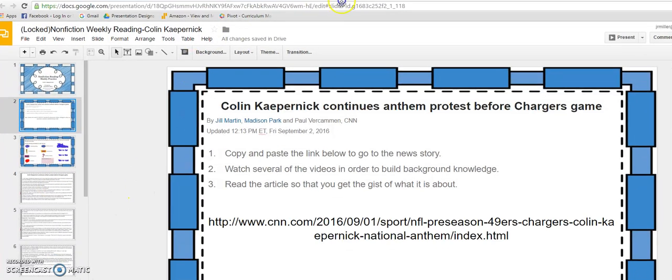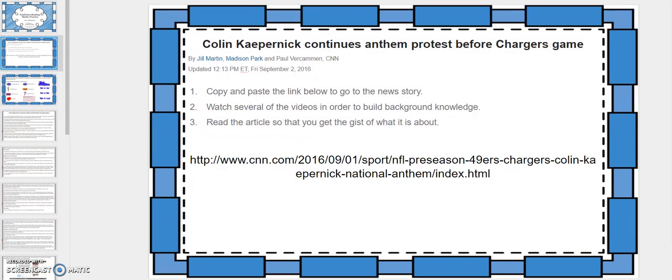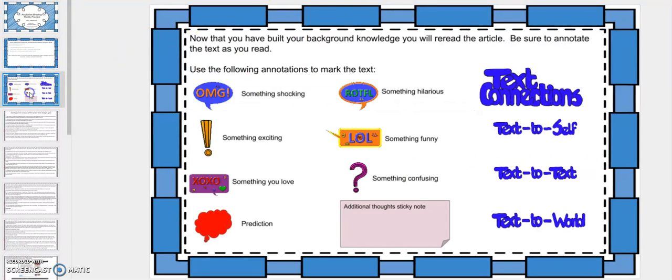First, watch the videos and then return to our non-fiction reading to see what to do next. One of the things that's very important is to be an active reader. Of course, we have our reading voice and our thinking voice, and we have our distracting voice. We want to quiet out our distracting voice and make sure that we're using our thinking voice as we're reading so that we can keep track of the information.